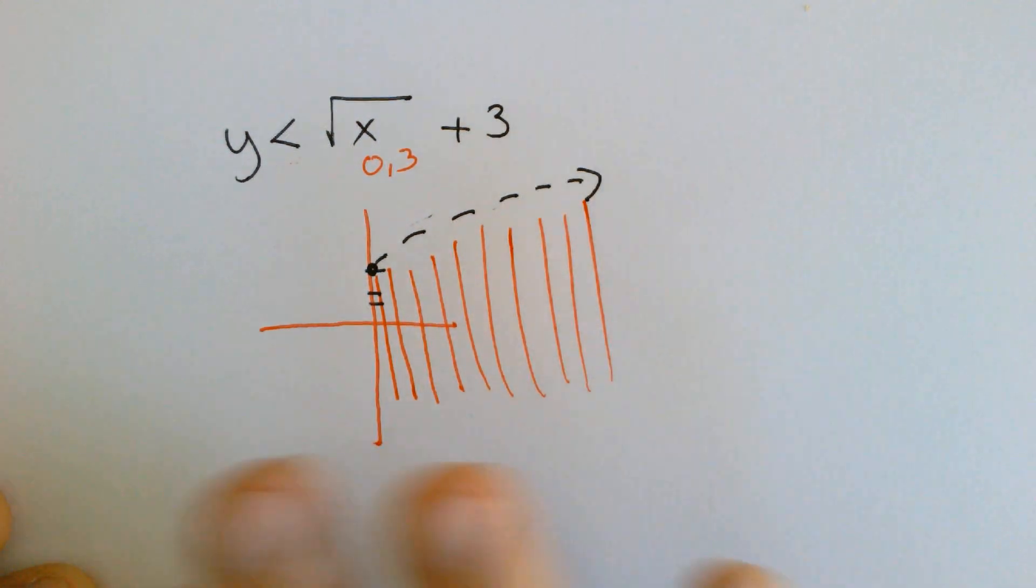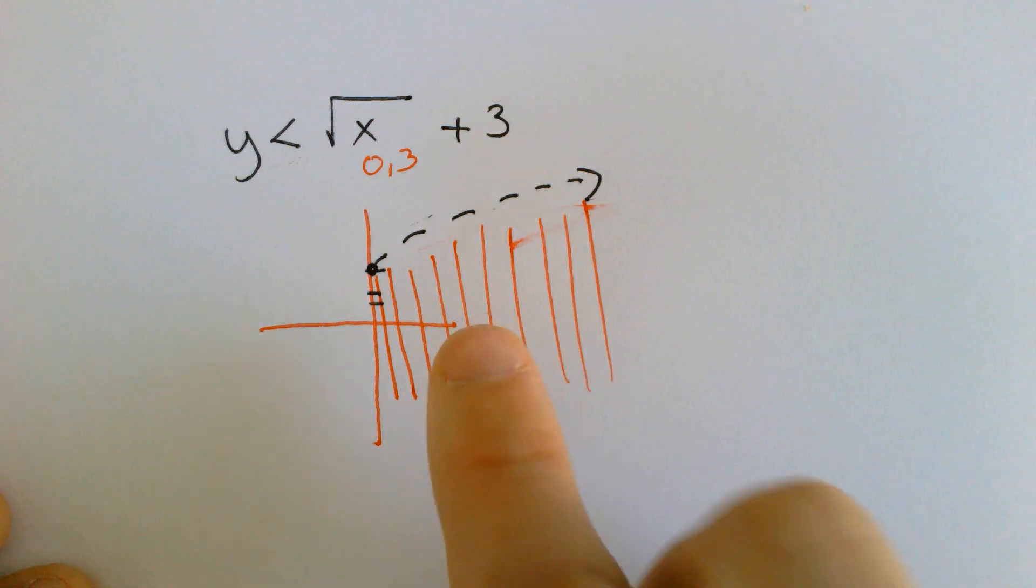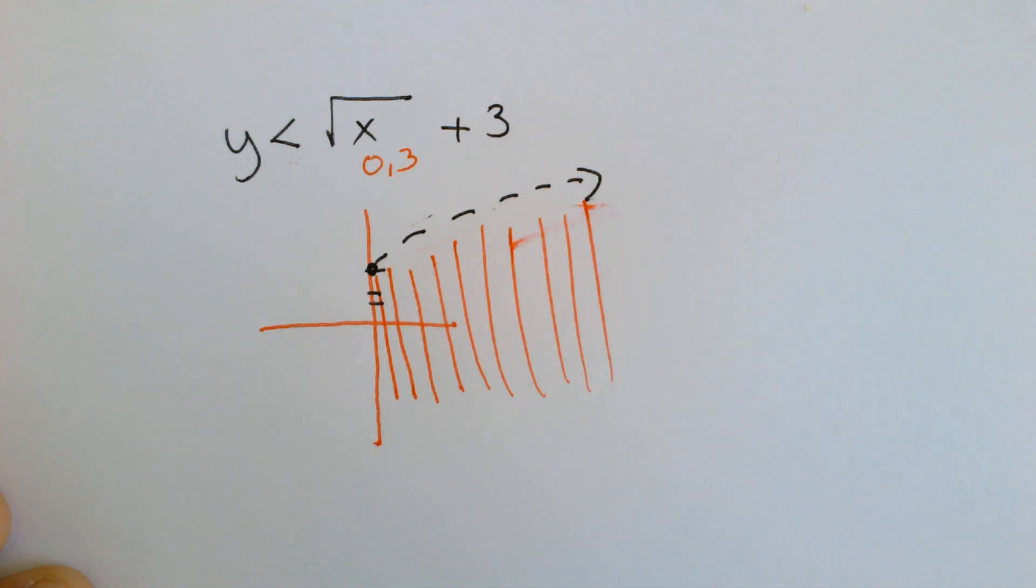And that is the graph. The graph is pretty easy to do, because you're really just graphing a normal square root, but then shading up or down and being careful that you graph a dotted line and not smudge the paper.